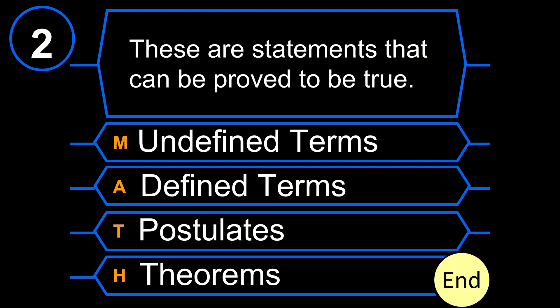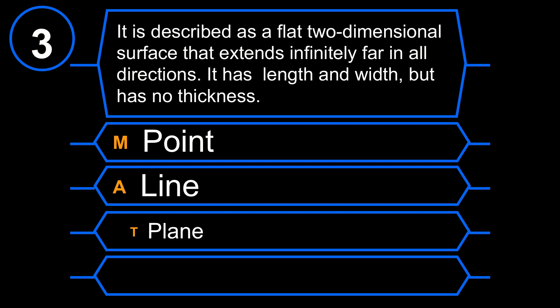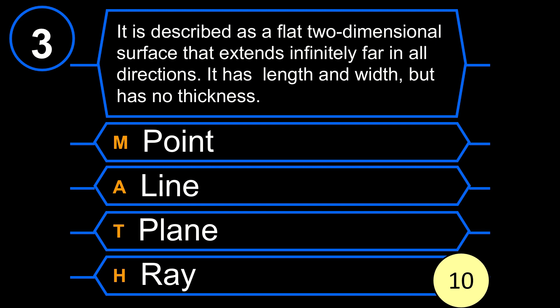For number 3: It is described as a flat two-dimensional surface that extends infinitely far in all directions. It has length and width but has no thickness. M. Point. A. Line. T. Plane. H. Ray.